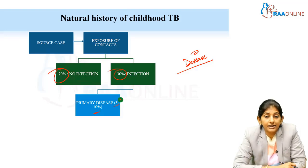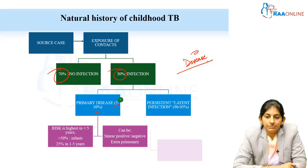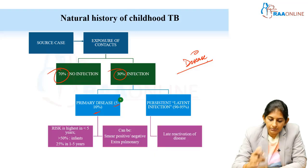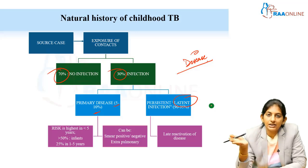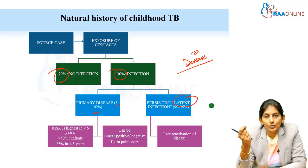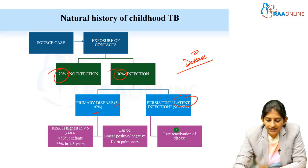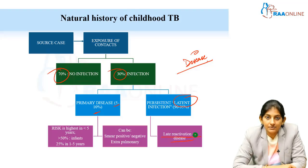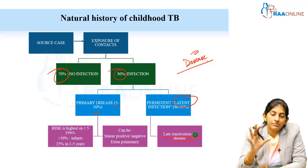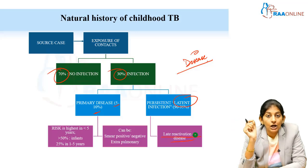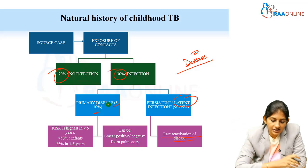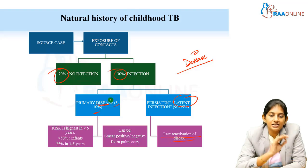Among those 30 percent who get infected, only 5 to 10 percent actually get the disease. The remaining 90 to 95 percent remain latent. At any time in the future, when there is a drop in immunity, the disease can get reactivated — there can be a late reactivation of disease.